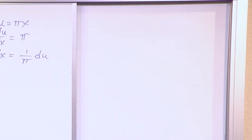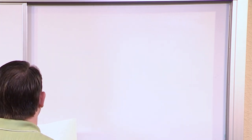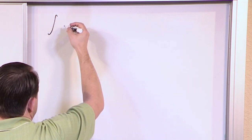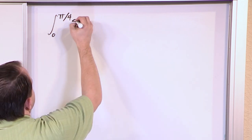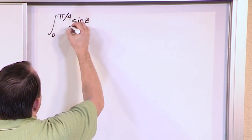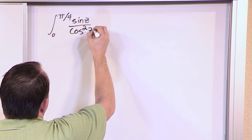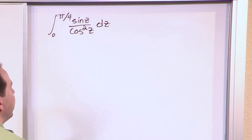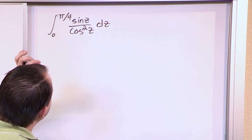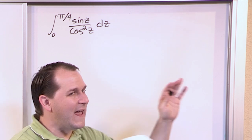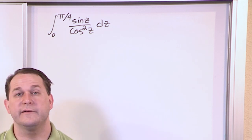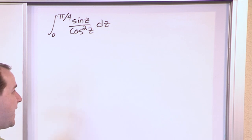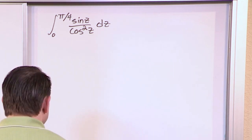Let's do another problem with limits of integration. We have the integral from 0 to pi over 4 of sine of z over cosine squared of z, dz. Z is a dummy variable — it doesn't matter. This is a definite integral so we'll get a number for the answer.